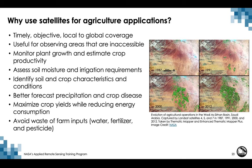Now let's go over why satellites are useful for agricultural applications. Satellites provide timely, objective, local to global coverage and are useful for observing regions of the planet that are inaccessible. They can monitor plant growth and estimate crop productivity, assess soil moisture and irrigation requirements, identify soil and crop characteristics, better forecast precipitation and crop disease, and maximize crop yields while reducing energy consumption. They also help avoid waste of farm inputs such as water, fertilizer, and pesticide, providing societal and economic benefits that can better inform the public, private, and non-governmental sectors.